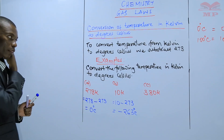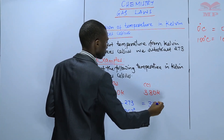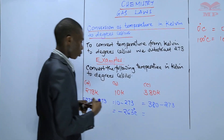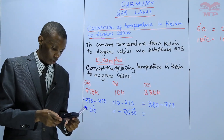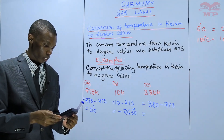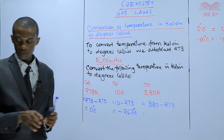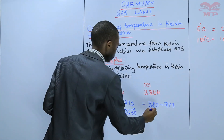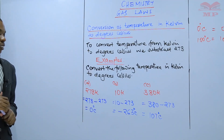The third example: 380 Kelvin. This will be 380 subtract 273. You can use your calculator if it's near you. 380 minus 273 gives you 107 degrees Celsius.